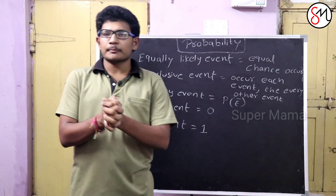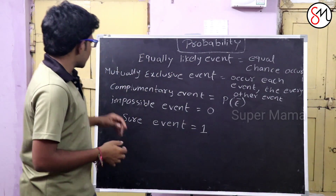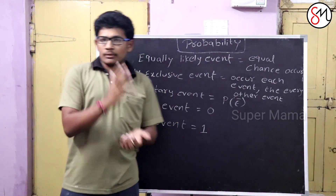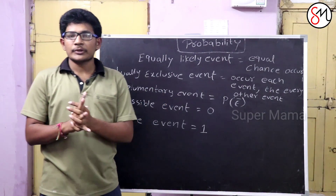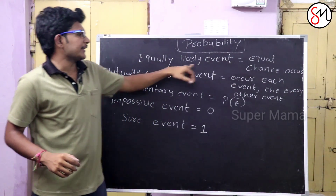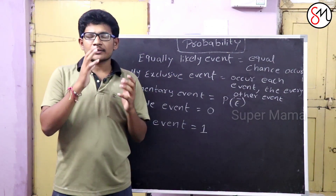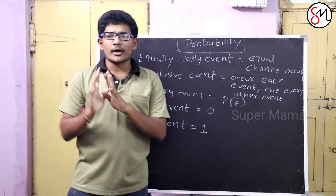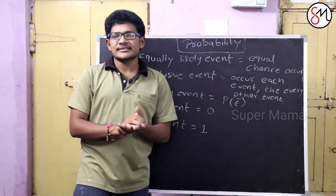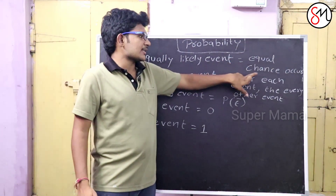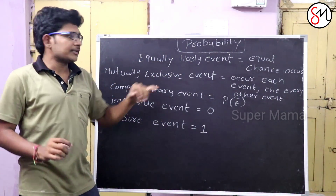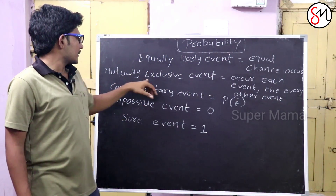I will show you some important points here. Equally likely events — I will show you the coin toss. In the coin toss, there are two chances: head and tail. This is an equally likely event.